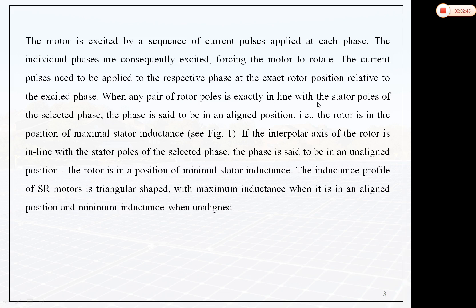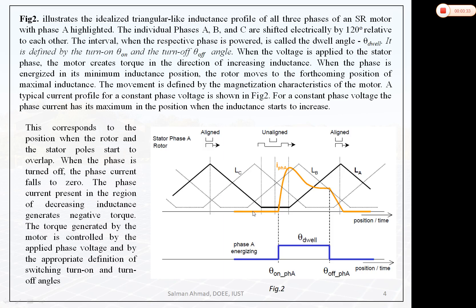When any pair of rotor poles is exactly in line with the stator poles of the selected phase, the phase is in the aligned position — i.e., the rotor is in the position of maximum stator inductance. If the interpolar axis of the rotor is in line with the stator pole of the selected phase, the phase is in the unaligned position and the rotor is at a position of minimum stator inductance. So inductance changes depending on the alignment of the rotor with the stator phases. The inductance profile of the Switched Reluctance motor is triangular-shaped, with maximum inductance in the aligned position and minimum inductance when unaligned. The bold line shown here is for the phase A inductance.